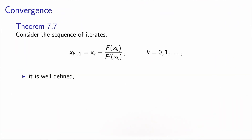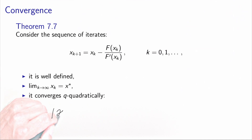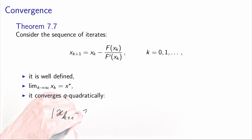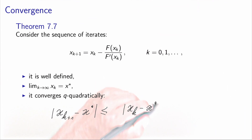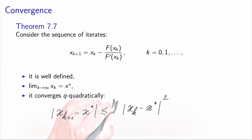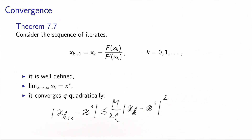There is a theorem stating that the iterates of Newton's method are well defined — it is valid to divide by f prime of xk because the derivative is bounded away from zero. The sequence converges to a point x-star, which is a root of the equation, and it converges q-quadratically. This means the distance between the next iterate and the solution is bounded by the distance of the previous iterate xk from the solution, squared — multiplied by a constant involving the Lipschitz constant m and the parameter rho.